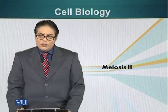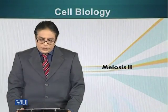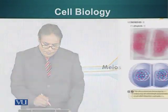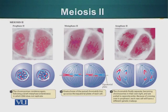In this module, we will talk about meiosis 2. In meiosis 2, the homologous chromosomes have separated in meiosis 1 and the nuclear envelopes started forming in telophase 1. The chromosomes are becoming decondensed. In prophase of meiosis 2, the chromosomes start to condense again and the nuclear envelope also starts to disintegrate.